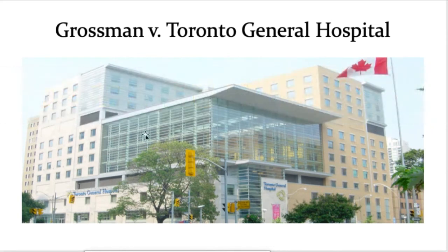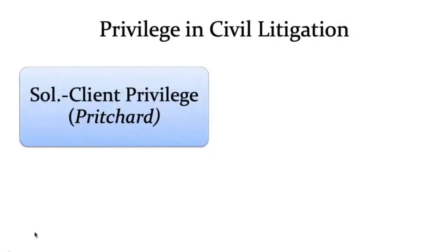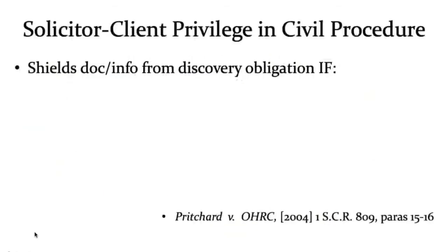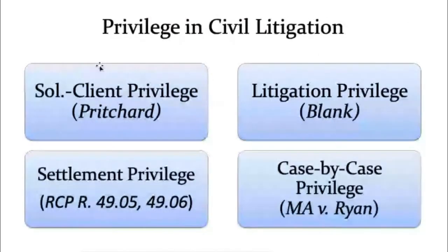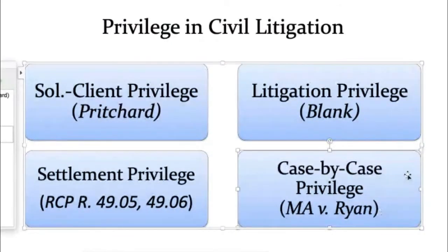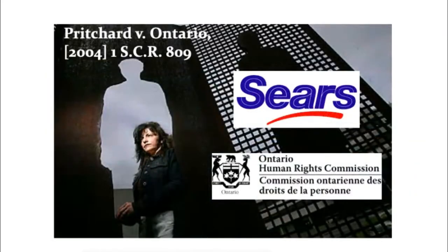Let's get into the weeds on privilege. Privileges are exceptions to the general obligation to disclose relevant documents. There are four major types of privilege in Canadian law: first, solicitor-client privilege, protecting communications between lawyers and their clients; second, litigation privilege, protecting documents prepared for the purpose of litigation; third, settlement privilege, protecting communications used in pursuit of voluntary settlement; and fourth, case-by-case privilege, protecting other privacy interests not covered by the other three.